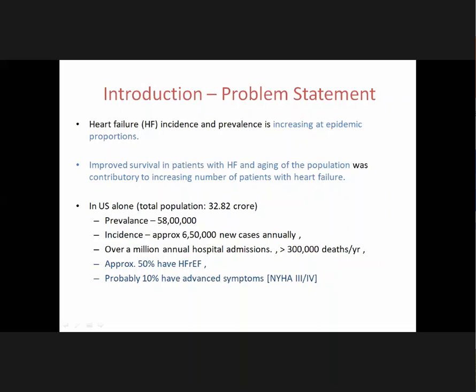Coronary artery disease and hypertension. Yes — hypertension and ischemic heart disease are the two major causes, with nearly 95% of patients belonging to that category after the age of 60 to 65. Then come other degenerative aortic valve disease and hypertension-related conditions. If they ask you about prevention of heart failure, it can be asked what steps you take to prevent it.